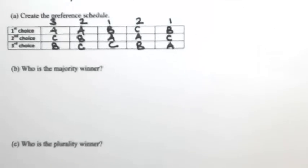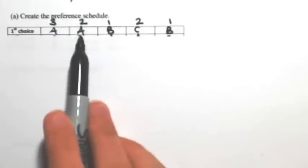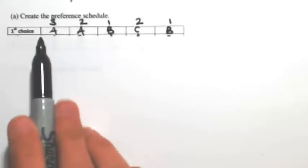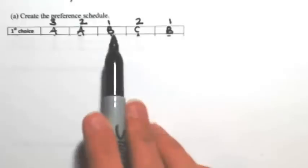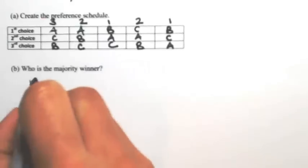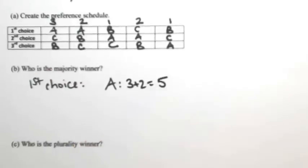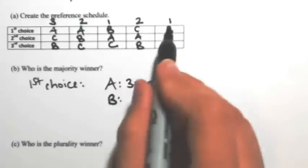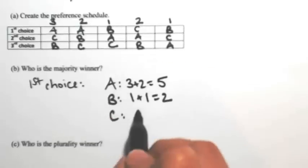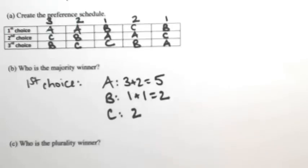From here, we're going to determine the majority winner. In determining the majority winner, the only thing we're concerned about are first choice votes. Three people had A first, and two other people had A, so altogether five people put A in first. Two people put B in first, and two people put C in first. So A has five first choice votes, B has two, and C has two.